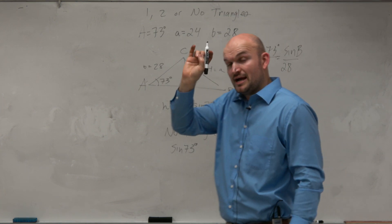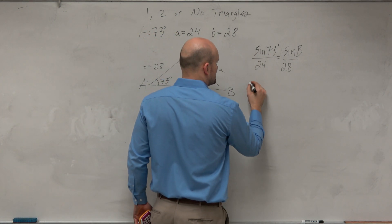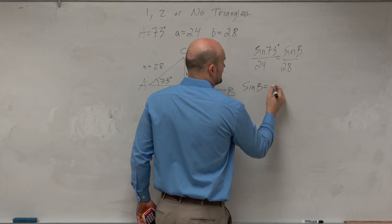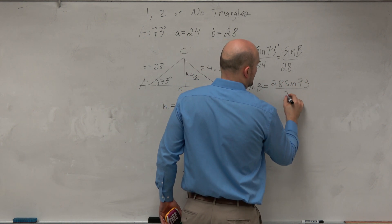Now, again, I take my unknown, I put that in the numerator. Now, when I go ahead and solve, I basically get the sine of b is equal to 28 times the sine of 73 all over 24. That's why I like having the unknown in the numerator, because I just multiply by 28 on both sides.